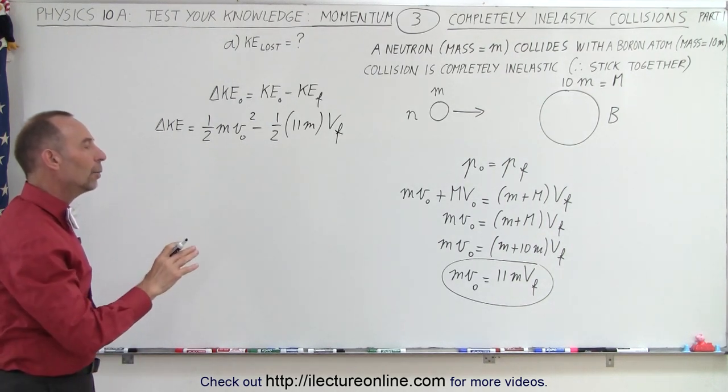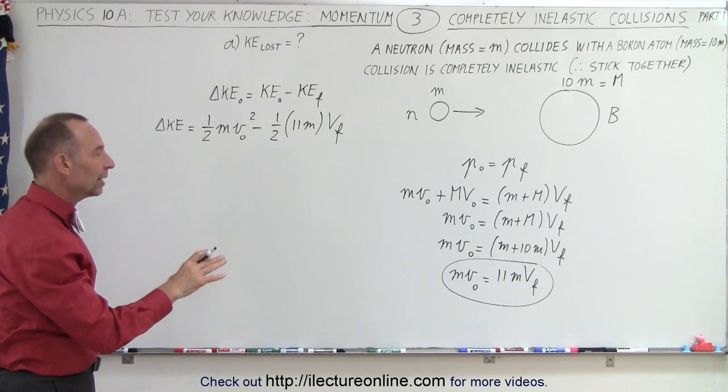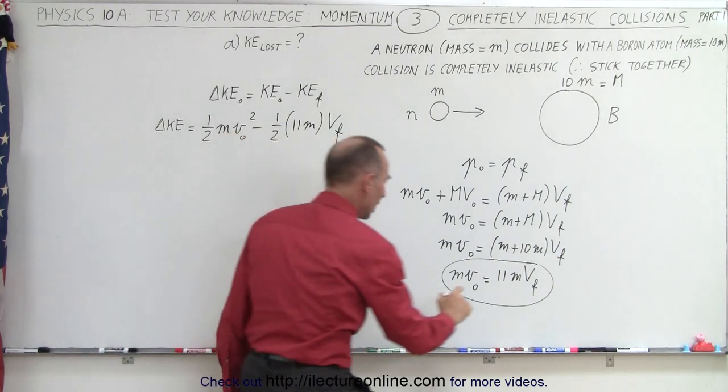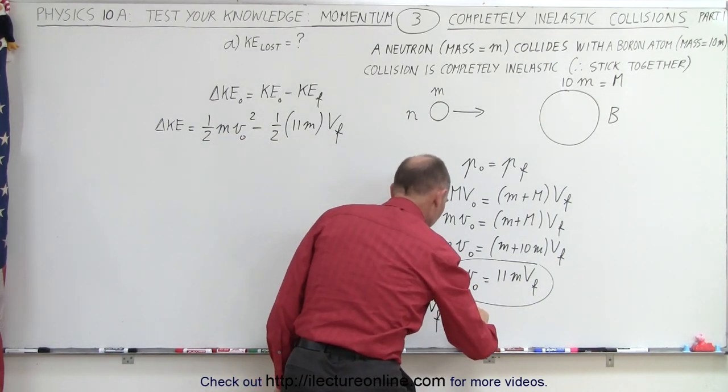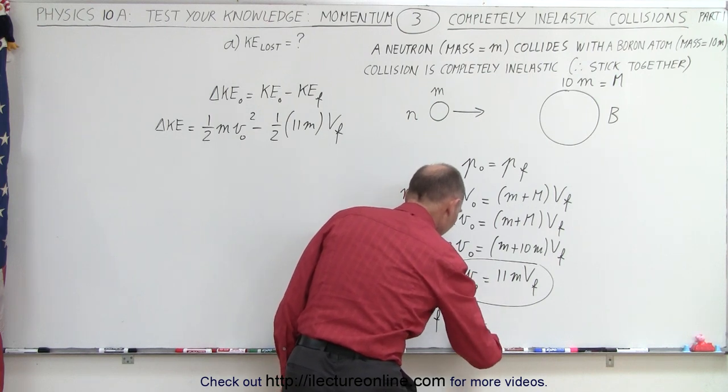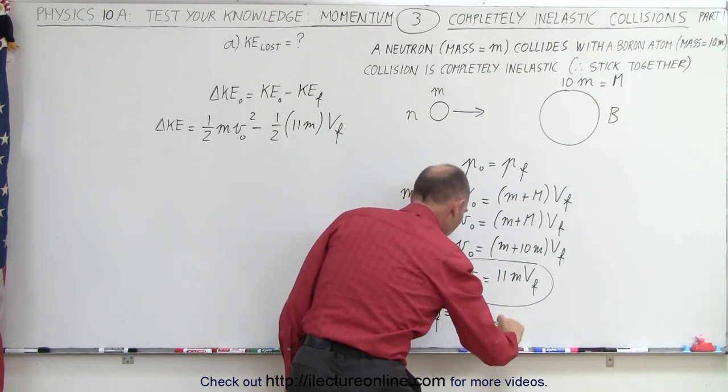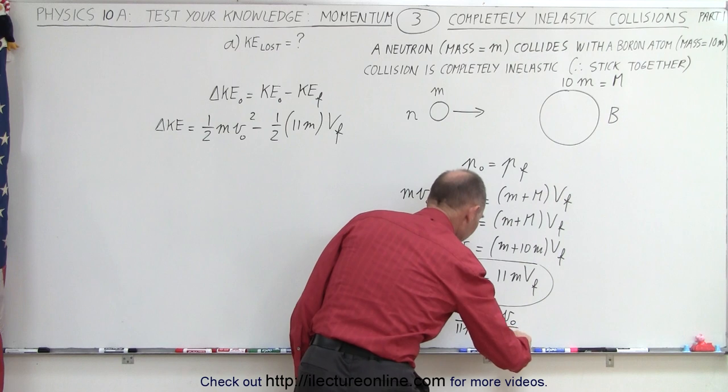Now we can somehow write v final in terms of v initial. Let's do that. So we can say that v final is equal to m times v initial divided by 11m, or it's v initial divided by 11.